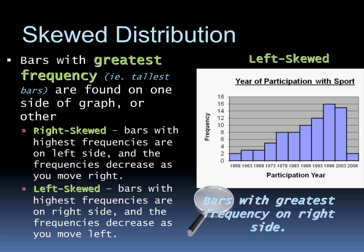The last is skewed distribution, where the bars with the greatest frequency are found on one side of the graph or the other. A right skewed distribution has data that is higher on the left side, and the frequencies decrease as you move right. A left skewed distribution has data that's highest on the right side, and frequencies decrease as you move left. So the bars with the greatest frequency in a left skewed distribution, like you see in the graph, are towards the right. This is basically shifting the normal distribution all the way to one edge, and this is what we sometimes see when giving out tests where averages are skewed. If the data you've collected is skewed, you need to be aware of this.